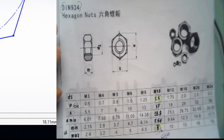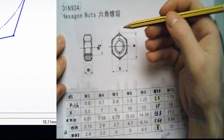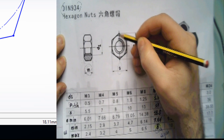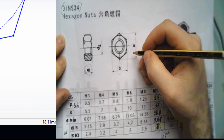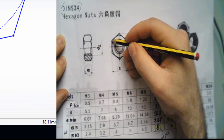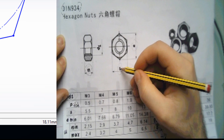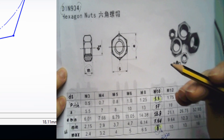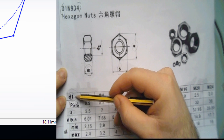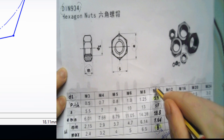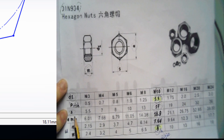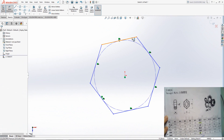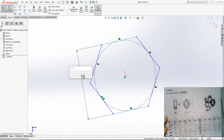There are two ways that we can measure the head of the nut. We can measure the head of the nut from points using the value of E, or we can measure from the lines using the value of S. Right now I am going to design a nut for 10 mm diameter. I am looking at the diameter of 10 mm and the value of S is 17.